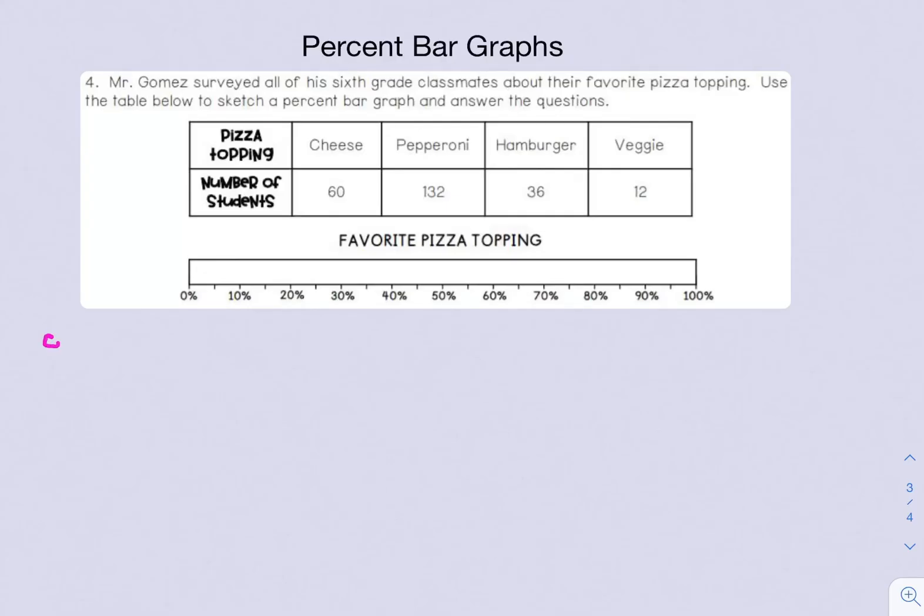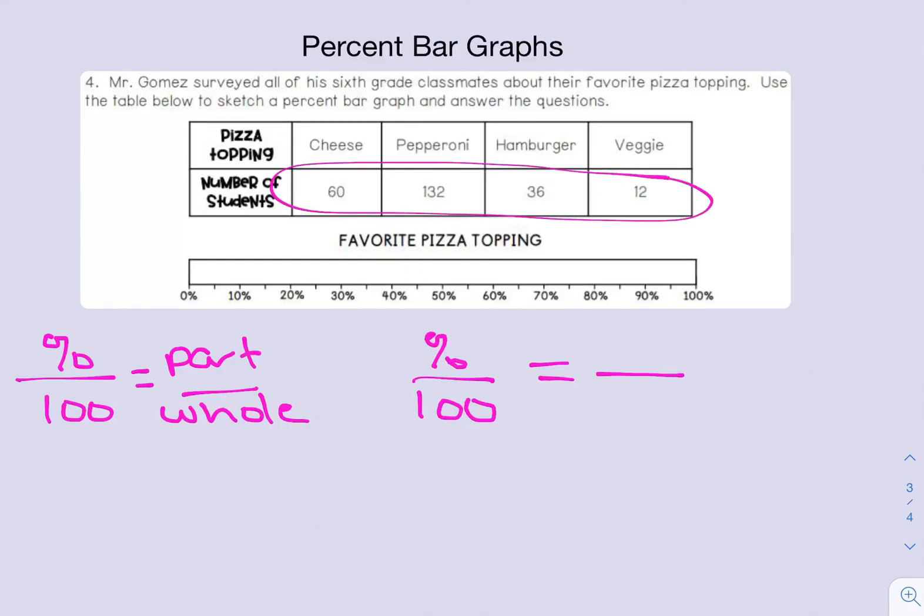To remind you from the last two videos, we need to use our percent proportion: percent over 100 equals the part over the whole. We're going to use that to calculate each of these four percentages. I'll set it up with 100 because that stays the same. We know we're looking for the percent each time, and our whole amount will stay the same for each one because we're using the same data set. What is the whole amount for this data set? When you add up all four numbers of students, you get a total of 240.